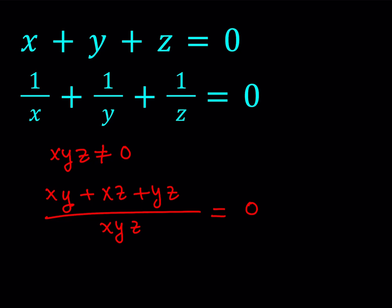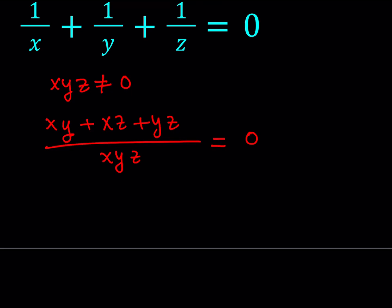Now, this is a fraction and we said that xyz as a product cannot equal 0. Then the numerator must be 0 in order for this to be 0. So we can safely say that from here, xy plus xz plus yz is equal to 0.